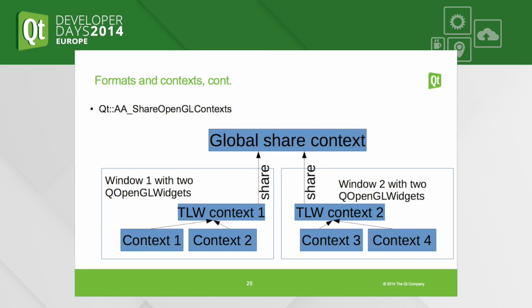There is a solution. In Qt 5.4 we have a new application attribute called shareOpenGLContexts, which under the hood, by creating an extra context, makes sure that all these contexts share with each other. Once this attribute is set, resources like textures will be visible and usable in all four OpenGL widgets. The restriction about parenting or moving things between windows no longer applies — you are free to do what you want.